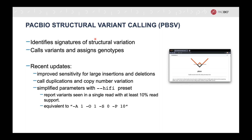PBSV was originally released with support for indels of 50 base pairs or longer as well as inversions. It works by identifying signatures of structural variation from individual reads, then examining all reads to call common variants and assign genotypes. In the past year, we've improved the sensitivity for large insertions and deletions, added detection for duplications and large copy number variants, and simplified the parameters for calling variants from HiFi reads with the HiFi preset. This will report any variant that's seen in a single read or seen once with at least 10% read support, and it's equivalent to these options passed directly to PBSV instead.